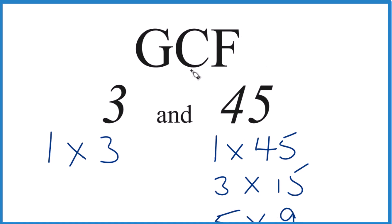So we have the factors. Let's see what's in common. 1, that goes into 3 and 45, that's in common. But 3, that's the greatest common factor that goes into 3 and 45 evenly.